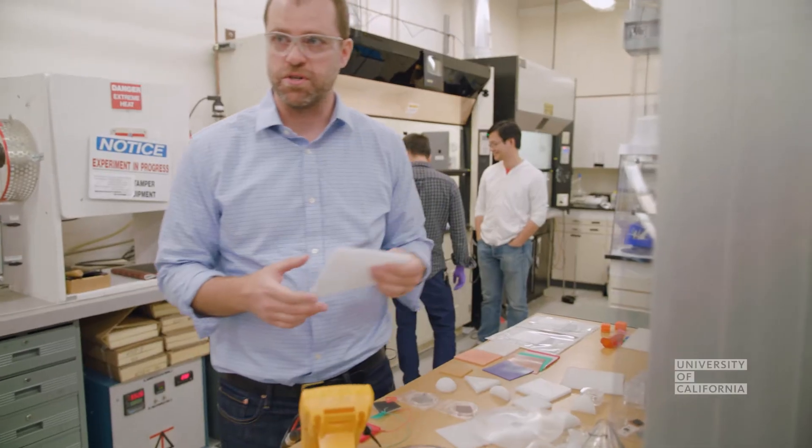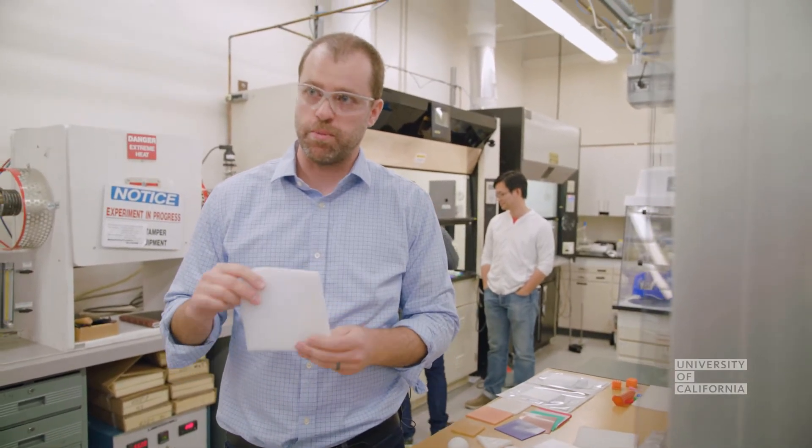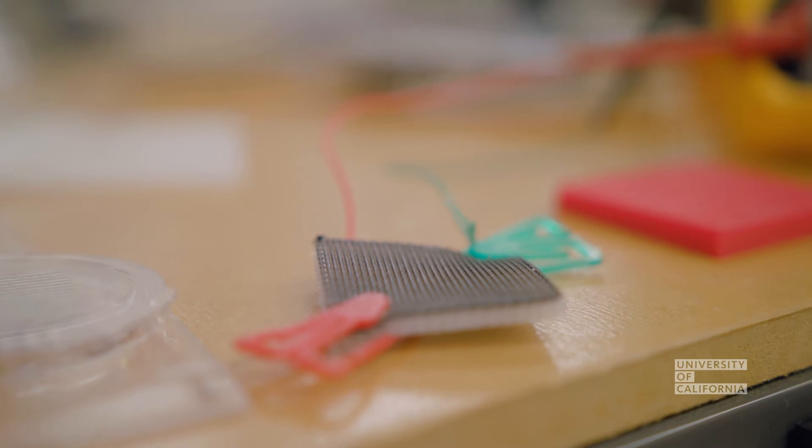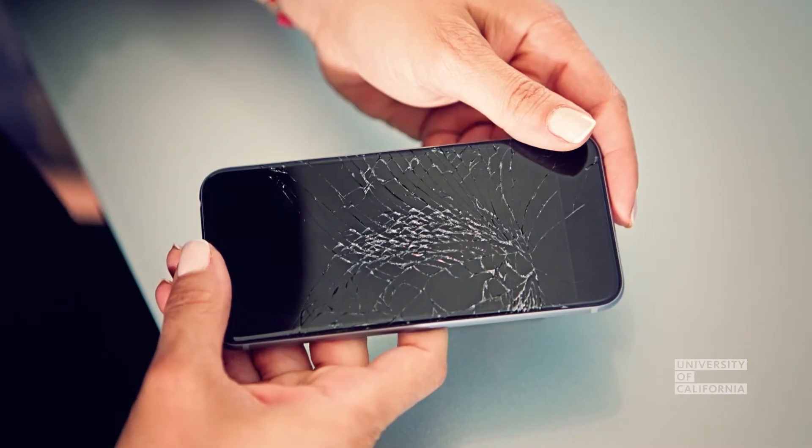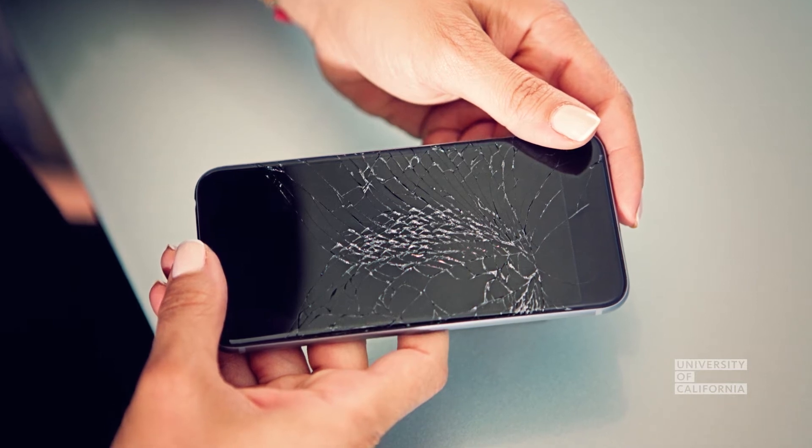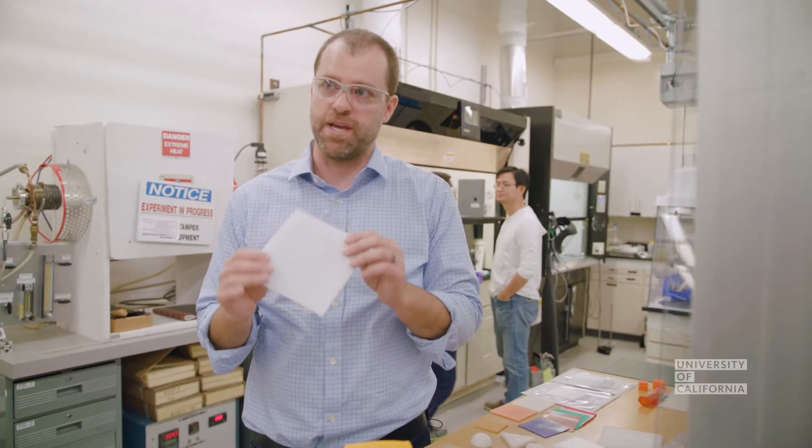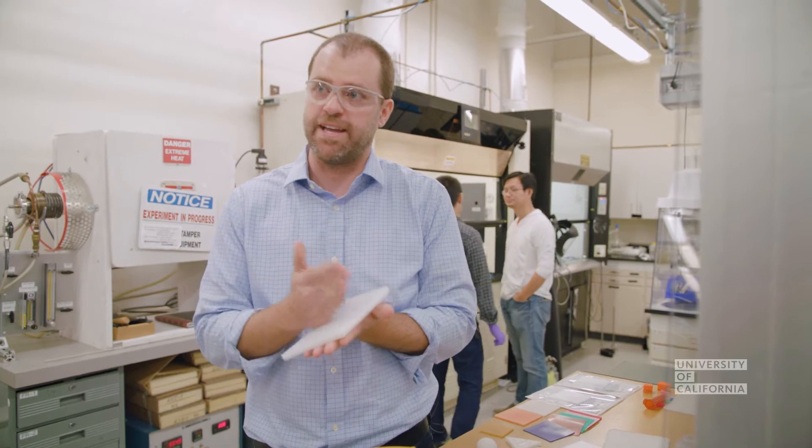One example that we've been developing here at Lawrence Livermore are mechanical energy absorbing materials. These are things that will resist an impact. One could think about in the context of a smartphone—drops and cracks due to drops. Could you design a better mechanical energy absorbing material to cushion that impact?